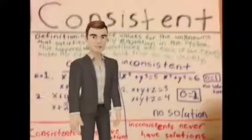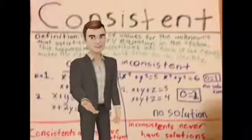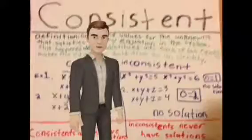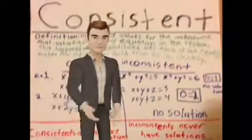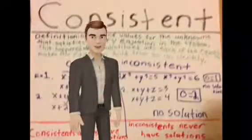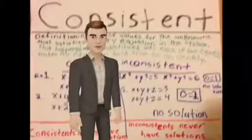x plus y plus z equals 3 and x plus y plus z equals 4. The solution would equal 0 equals 1 which is also no solution. These are examples of inconsistent systems.